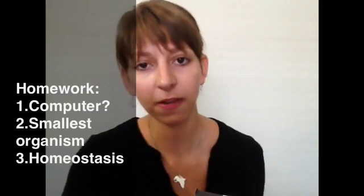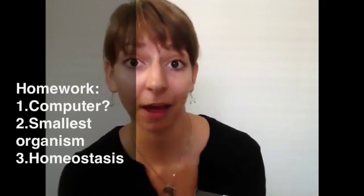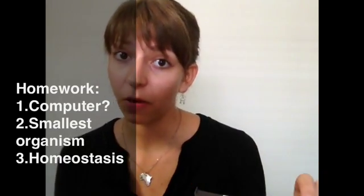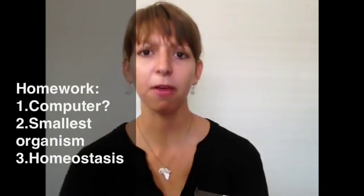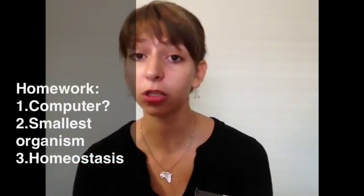For tonight, I want you to go through the characteristics of life we just discussed and use your computer as an example. Go through every single characteristic and say if the computer applies — does your computer grow and develop? Is it made of cells? Is it made of DNA? Also for homework, look up what the smallest living organism on Earth might be, cite your source, and we'll talk about it in class tomorrow. Lastly, find a few examples of homeostasis in the human — how do we regulate our internal balance? Those are your three things I want to see tomorrow in your notes. Have a great night!